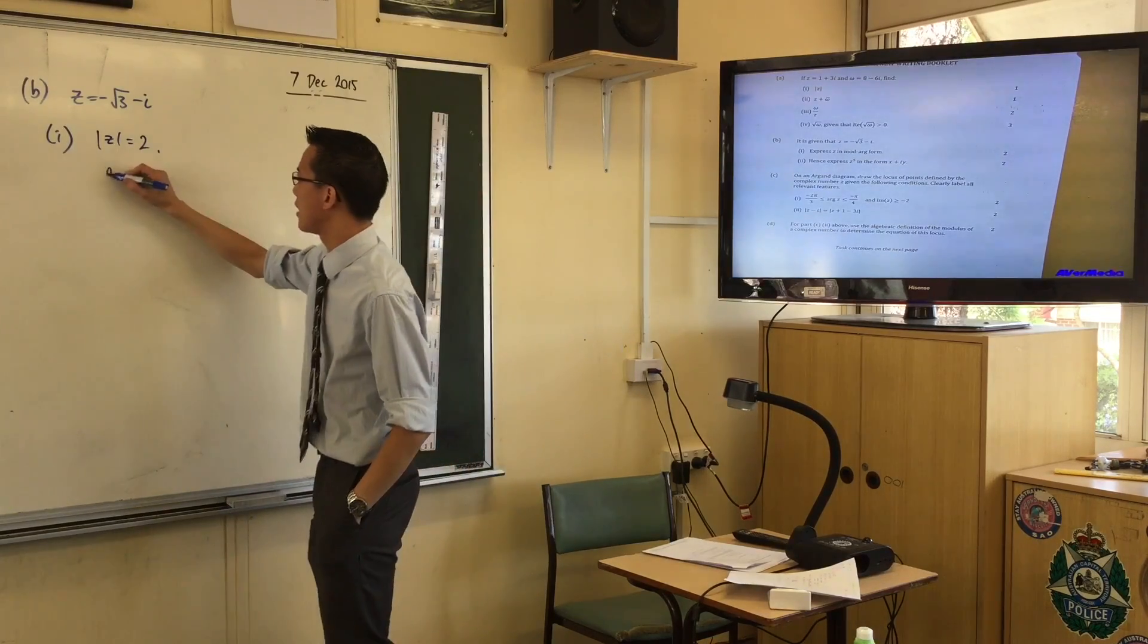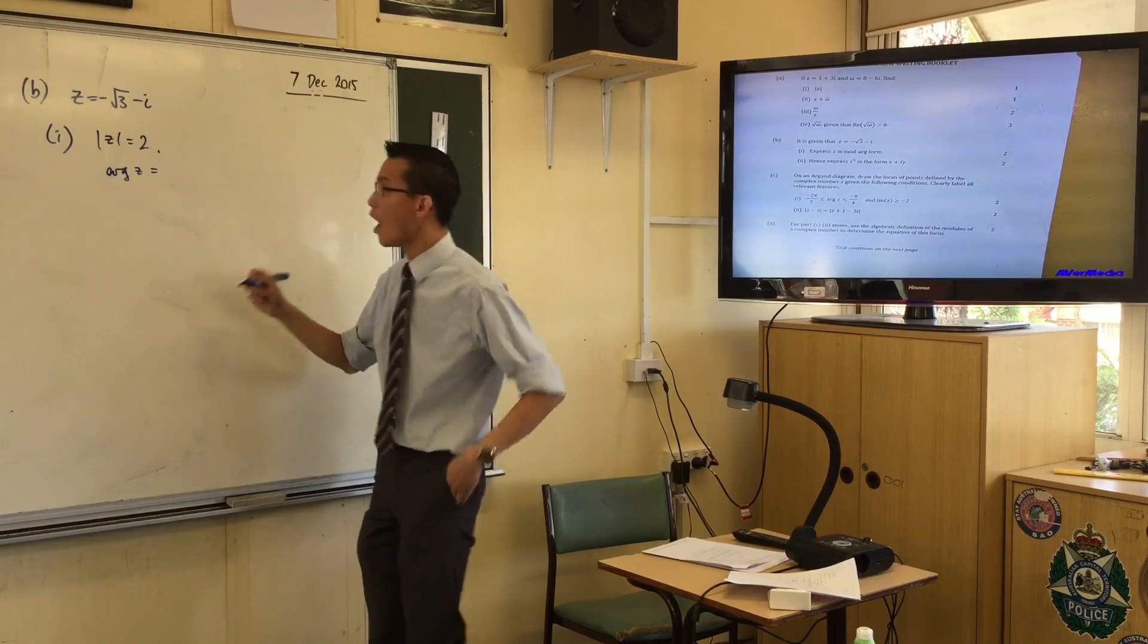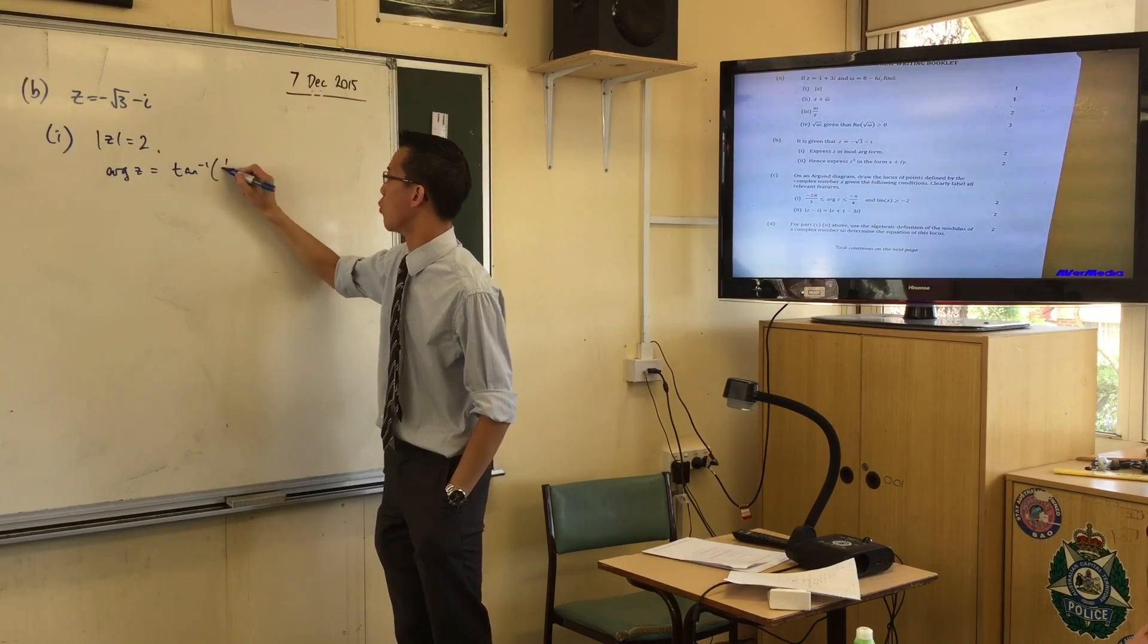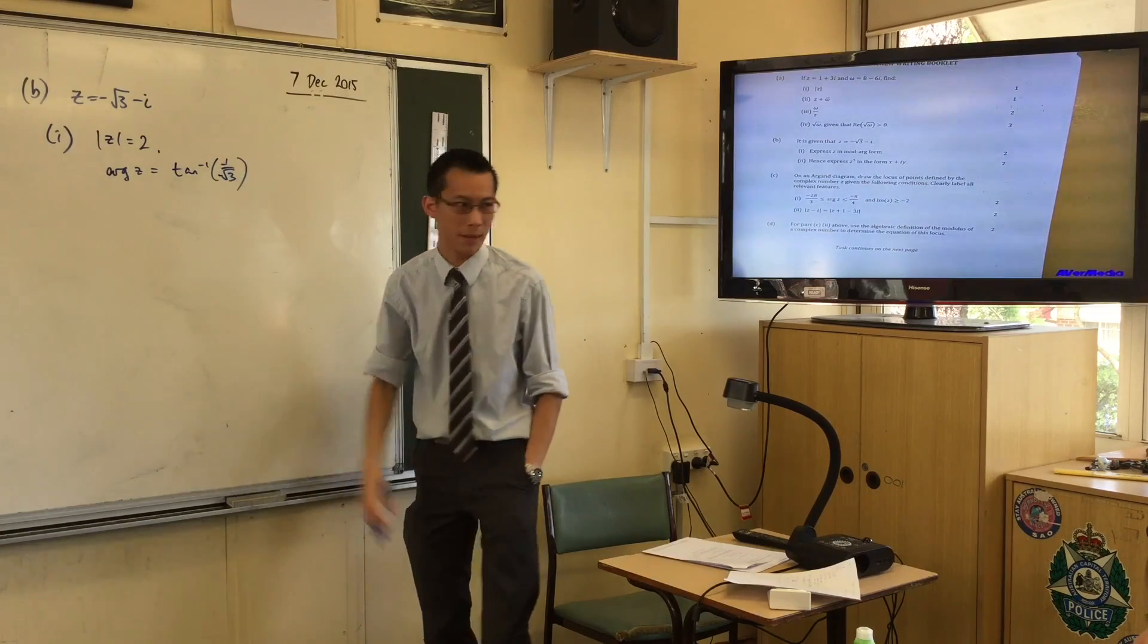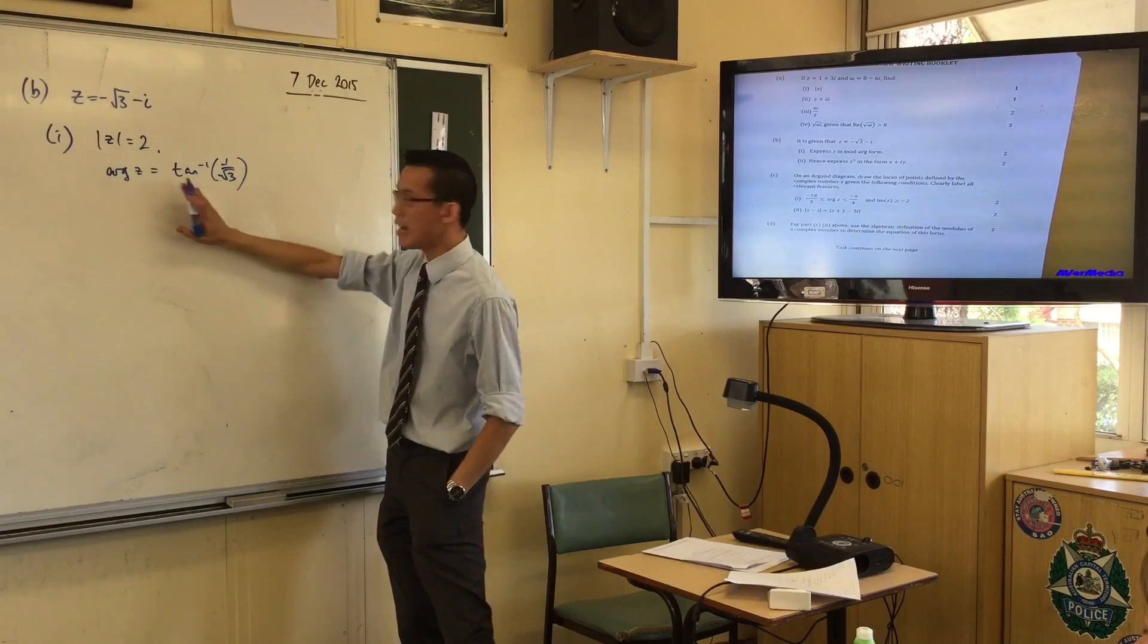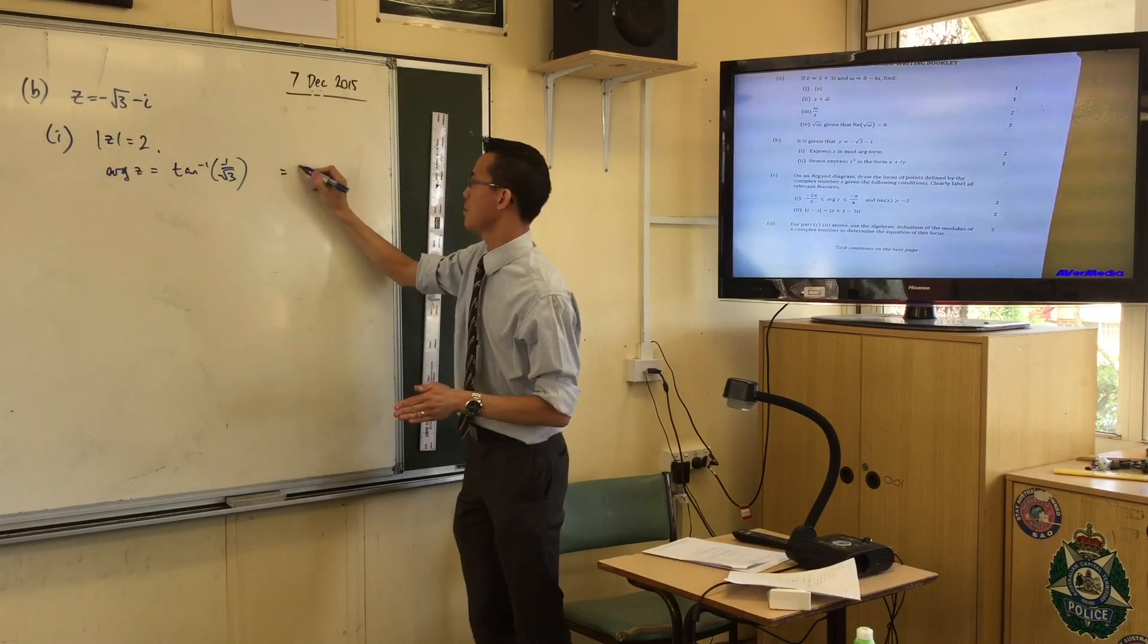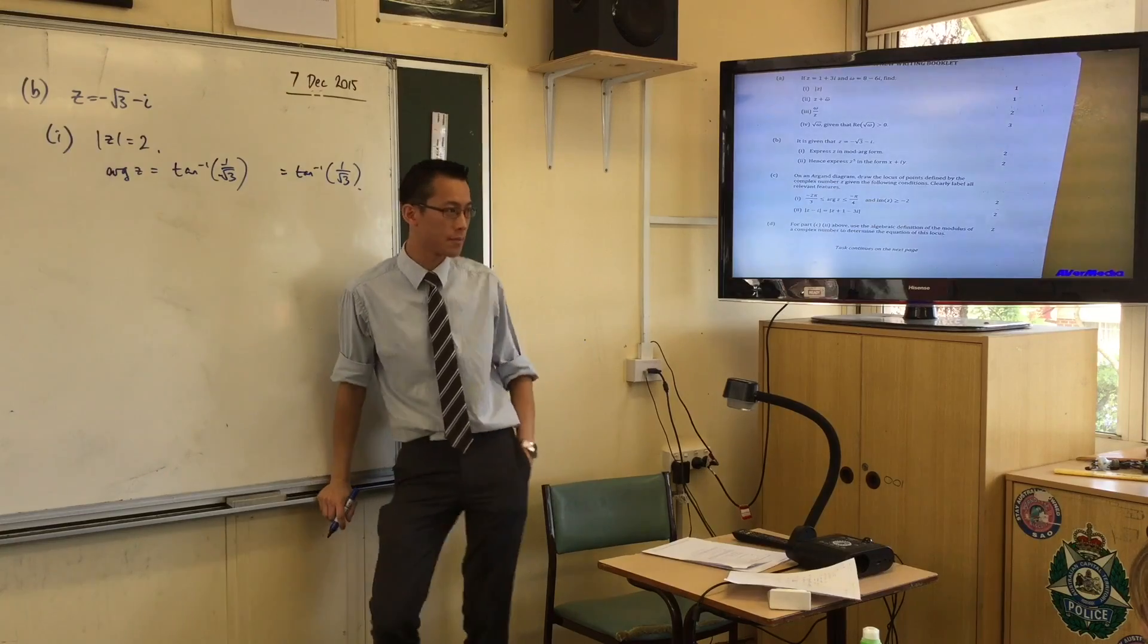But then people went to here. They said arg z equals, and then they said, oh cool, I know the way I remember this from an auxiliary angle, right? I just want an angle, so I'll go tan inverse of 1 on root 3. Well, actually it's minus 1 on minus root 3, okay? But that's kind of the problem, right? Because you can see here, tan inverse treats minus 1 on minus root 3 exactly the same as positive 1 on positive root 3, okay?